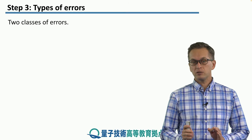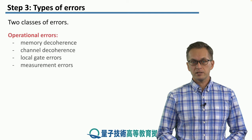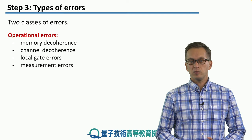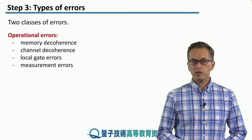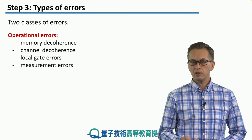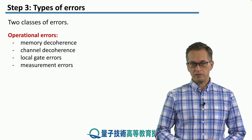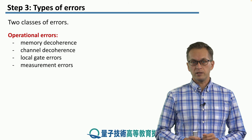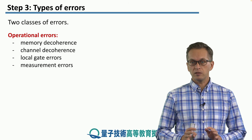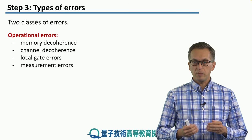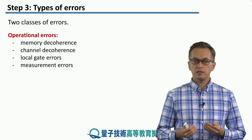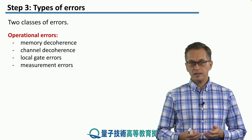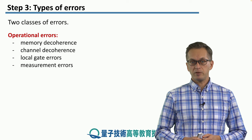There are generally two classes of errors. The first class is known as operational errors. These include memory decoherence, channel decoherence, local gate errors, and measurement errors. Even when you store your qubit inside a memory and don't manipulate it, the memory itself decoheres, meaning that the qubit loses its quantum properties. This is the memory decoherence.